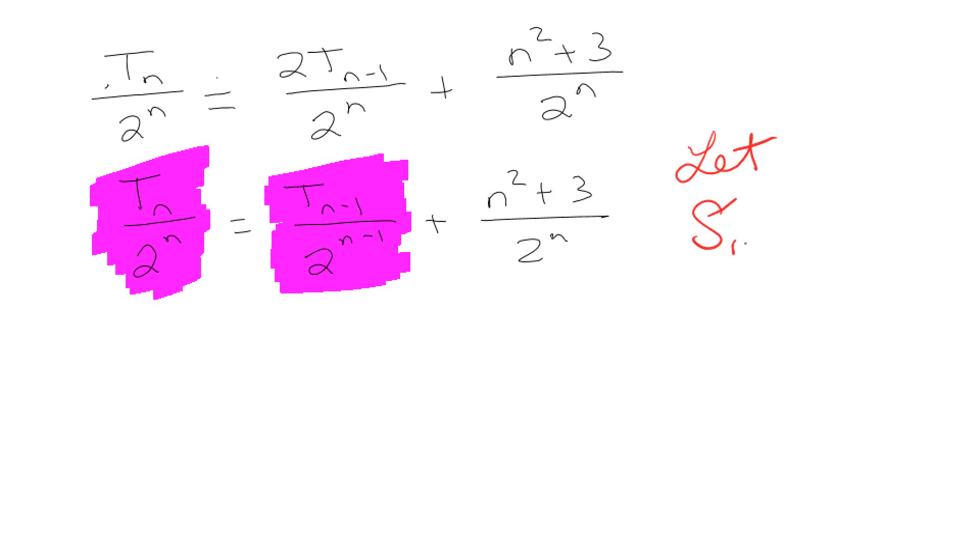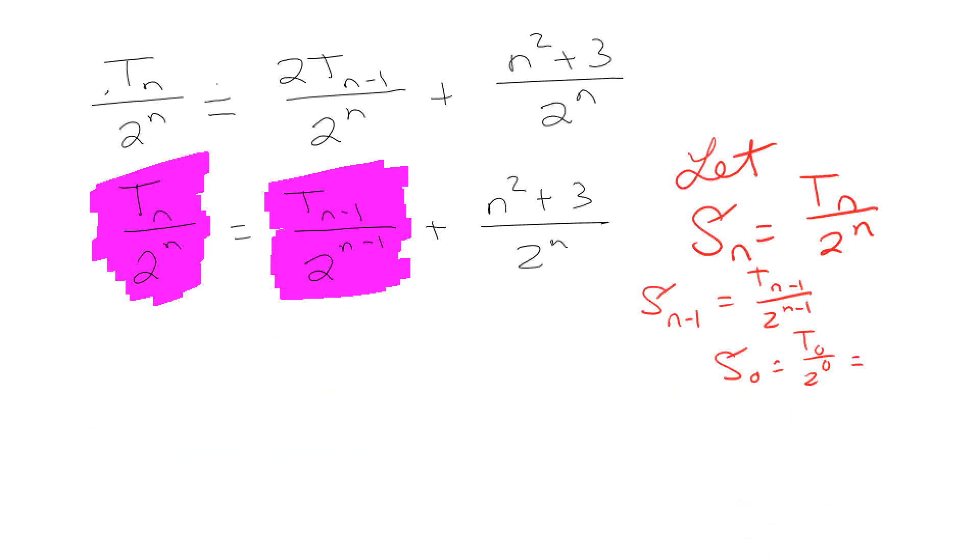We can let S sub n be equal to T sub n over 2^n. Which means, along the side, that S sub n minus 1 is T sub n minus 1 over 2^(n-1). And S sub 0 is equal to T 0 over 2^0. So T 0 is 3 and 2^0 is 1, so it's just 3. Super, super amazing.